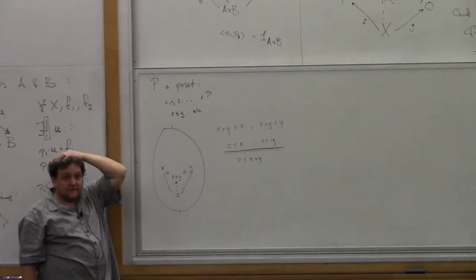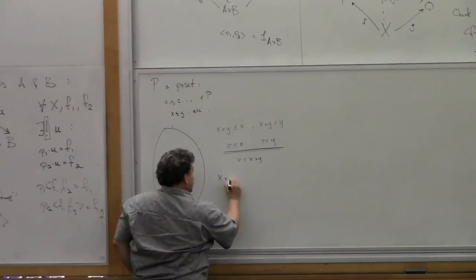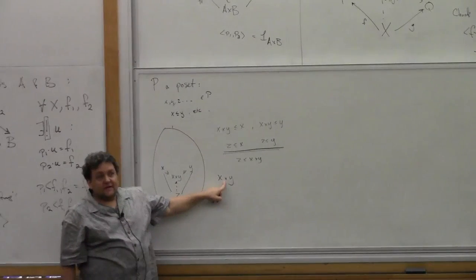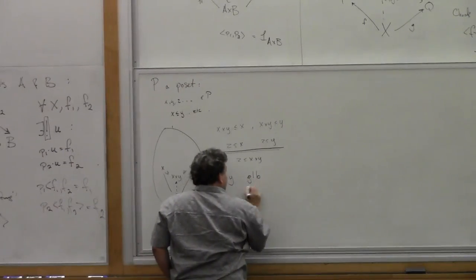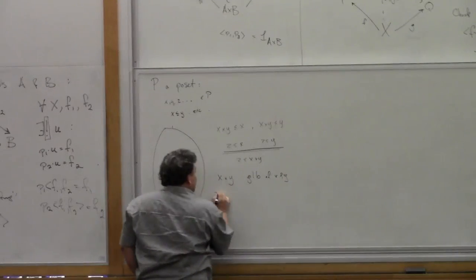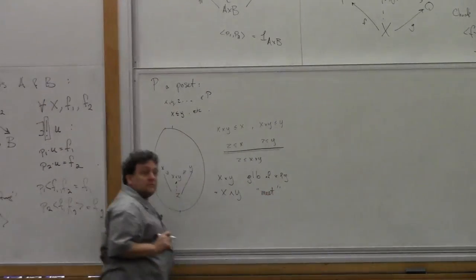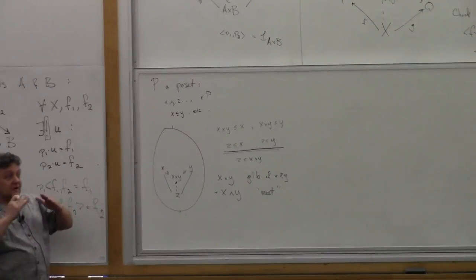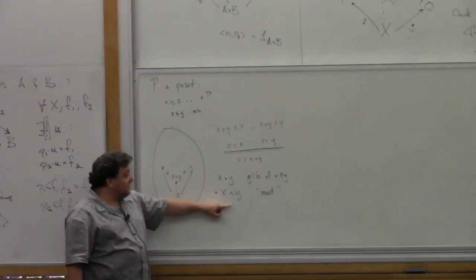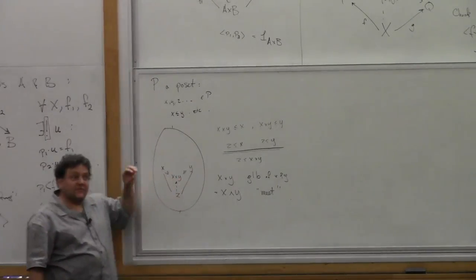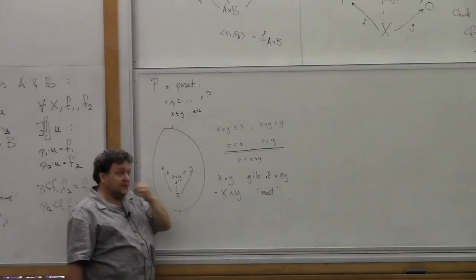So for any Z: Z ≤ X×Y if and only if Z ≤ X and Z ≤ Y. Anybody recognize what that's saying? X×Y is the greatest lower bound of X and Y — usually written with the meet sign ∧ — also called the meet or conjunction. The conjunction of two formulas, or meet of two elements in a meet semi-lattice, is exactly the product in the category of posets. We specialize the categorical definition to a poset category and recover the usual definition of a meet.